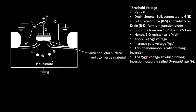Conversely, in a PMOS device, you have an N-type substrate with P-plus source and P-plus drain. You apply a negative voltage, which repels all the electrons from that area and attracts holes from the N-type substrate, forming a channel of P-type — positively charged — carriers. So in PMOS, the negative charge particles are replaced by positively charged holes, and you see a P-channel forming between the P-plus source and P-plus drain.